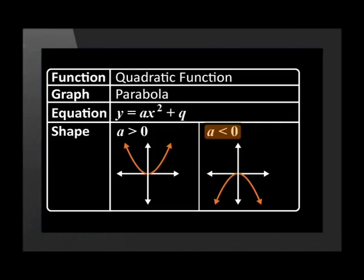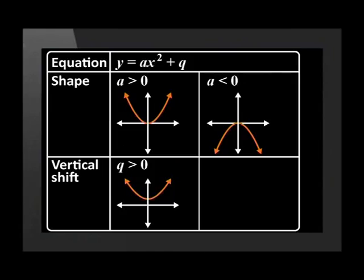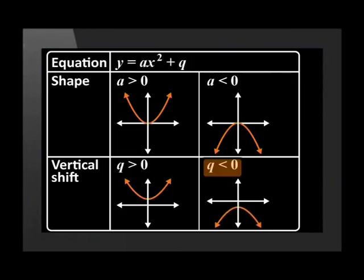If the value of a is less than 0, in other words negative, then the parabola concaves down — we remember it as having a sad face. The value of q results in the vertical shift. If q is positive, then the graph shifts q units up. If q is negative, then the graph shifts q units down.